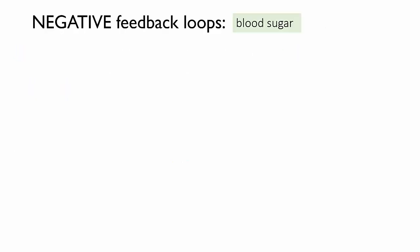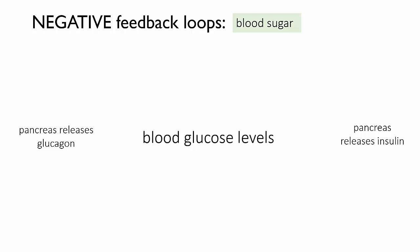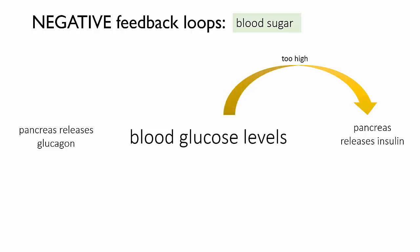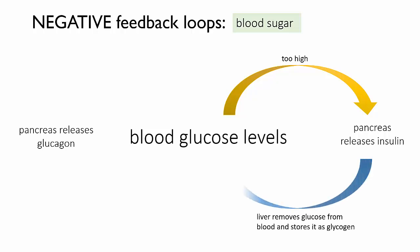The pancreas is constantly monitoring your blood glucose levels. After you've eaten a meal and your digestive system gets to work, the concentration of glucose in your blood goes up. When the pancreas detects that the glucose levels are getting a little bit high, it releases the hormone insulin into the blood. This hormone travels to the liver and its effect is to stimulate the liver cells to remove glucose from the blood, convert it into glycogen, and store it. Over a short while, this reduces the amount of glucose in the blood.